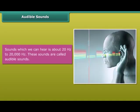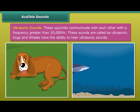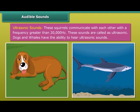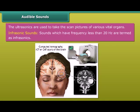Audible sounds are those which we can hear, ranging from about 20 hertz to 20,000 hertz. Ultrasonic sounds have a frequency greater than 20,000 hertz. Squirrels communicate with each other using ultrasonic sounds. Dogs and whales also have the ability to hear ultrasonic sounds. Ultrasonics are used to take scan pictures of various vital organs.